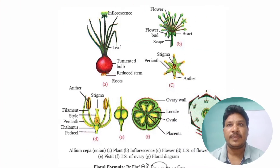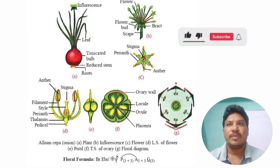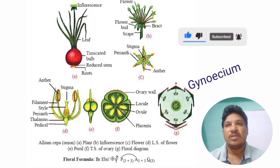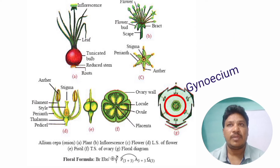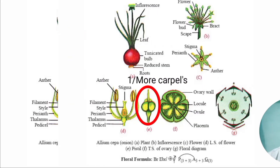Gynoecium is the female reproductive part of the flower, made up of one or more carpels.